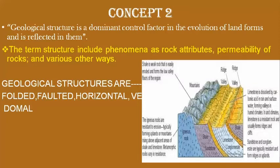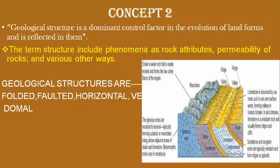Concept number two states that geological structure is a dominant controlling factor in the evolution of landforms and is reflected in them. Geological structure refers to what kind of rock it is — its physical and chemical attributes such as porosity, permeability, and hardness — whether it is igneous, sedimentary, or metamorphic rock. It includes all the Earth's materials out of which landforms are carved.